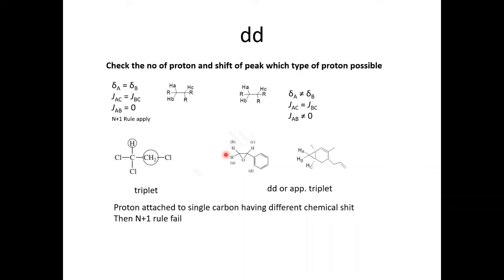In this type of compound, you have protons A, B, and C with different chemical shifts — all chemical shifts are different. Sometimes the coupling constant is also different, same, or similar. If they are different, then you get a doublet of doublet. If they have similar or the same chemical shift, you will get the apparent triplet.